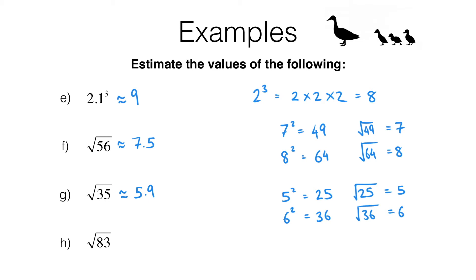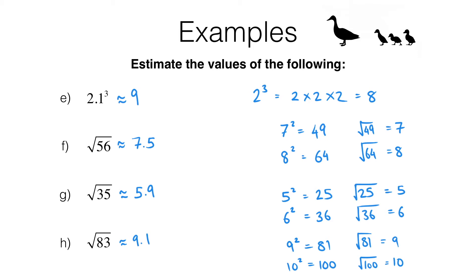For example h, I use the same method. 83 is between 81, which is 9 squared, and 100, which is 10 squared. So the square root of 81 is 9 and the square root of 100 is 10. Since 83 is a lot closer to 81, the square root of 83 is going to be a lot closer to 9, so I estimate 9.1. To become fast at these questions, you need to recall your square numbers quickly.